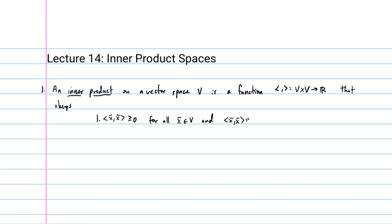And ⟨x, x⟩ is only equal to zero if and only if x itself is the zero vector in your vector space. So only the zero vector squared is equal to zero — only ⟨x, x⟩ = 0 implies x is the zero vector. Any other vector x gives a positive number. The next criterion is that ⟨x, y⟩ equals ⟨y, x⟩ for all x and y in our vector space V. That's called symmetry.